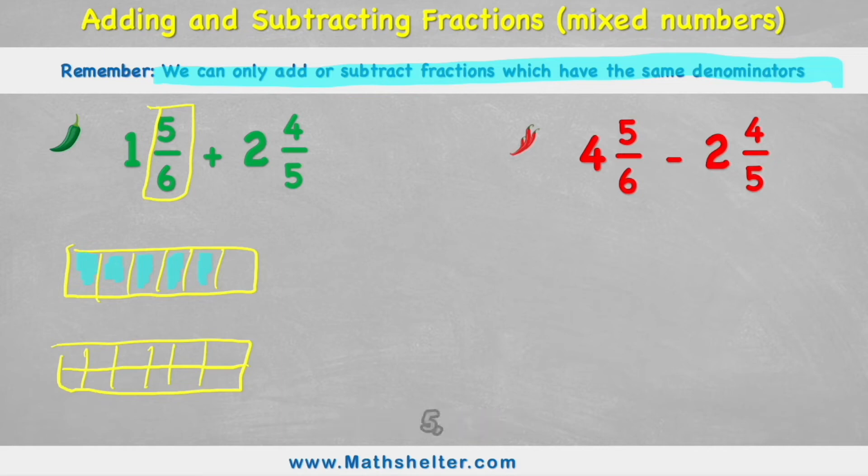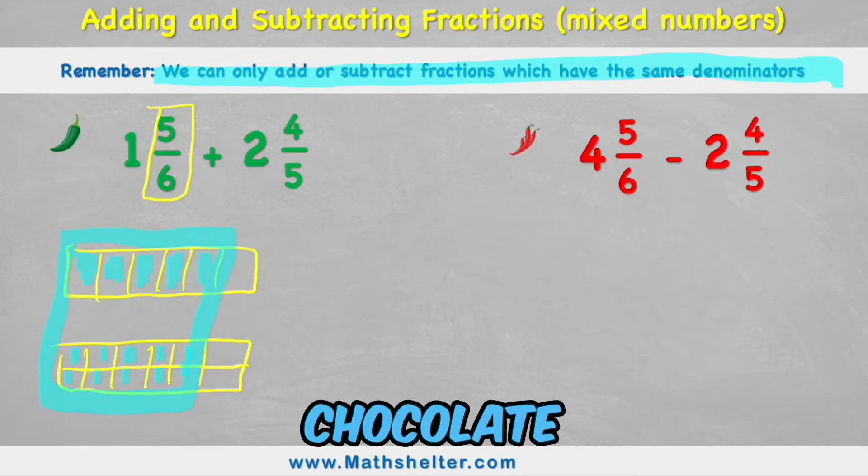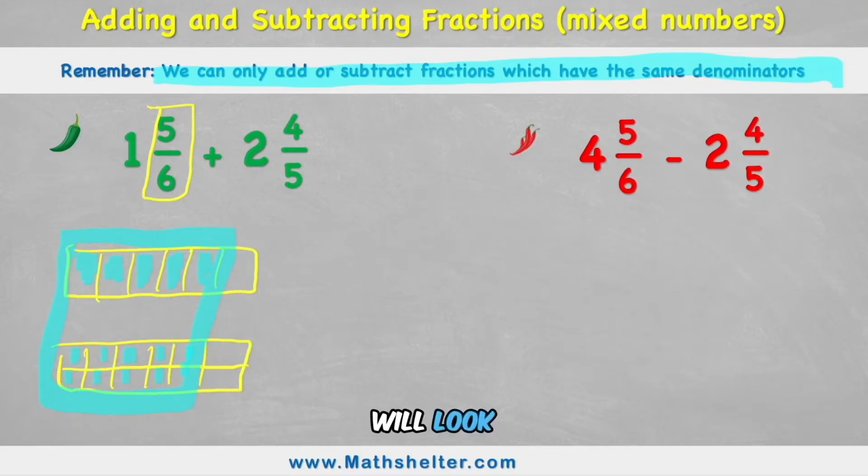But this time, instead of having 5, we would have 10. So we still have the same value, but our chocolate bar has been cut into different amounts, and we get different amounts of them. Or in other words, my fraction will look different.